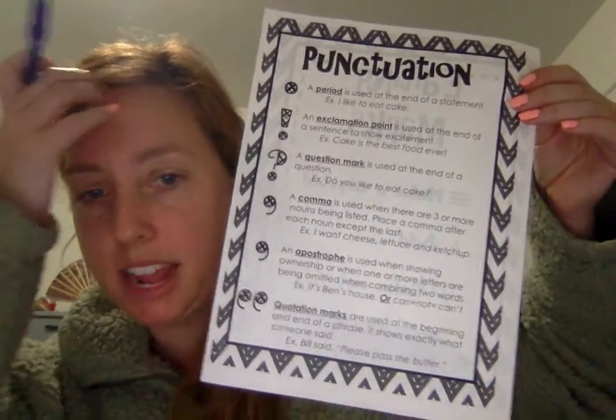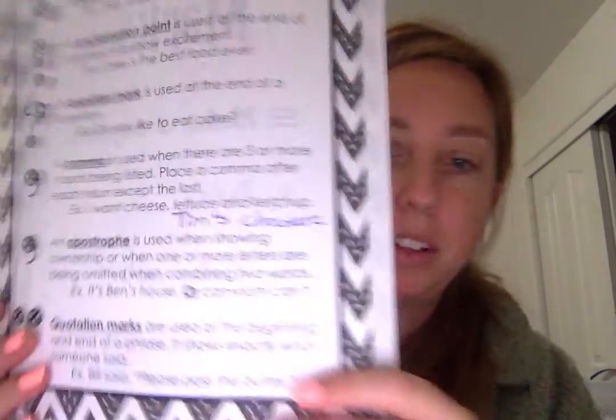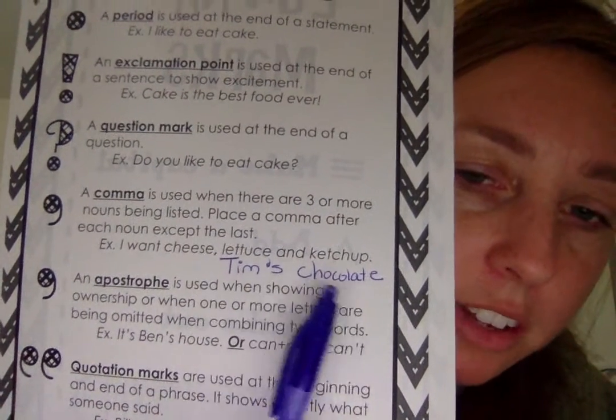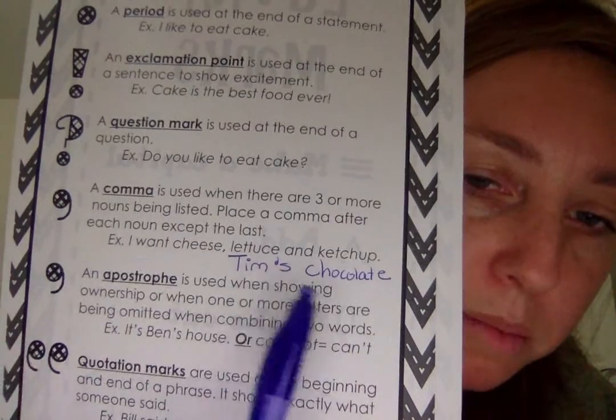And then there's an apostrophe. The apostrophe is used when showing ownership. So say it's Tim's chocolate — we can't take Tim's chocolate because he loves it. So I'm going to write the name Tim with apostrophe S, chocolate. And then lastly, quotation marks are used at the beginning and end of a phrase — it shows exactly what someone said. Example: Bill said, 'Please pass the butter.'